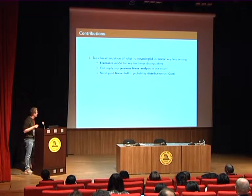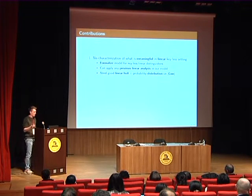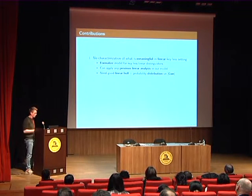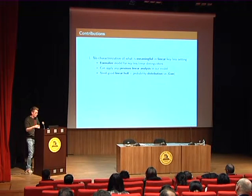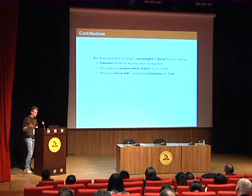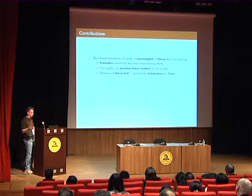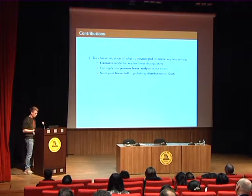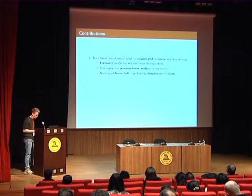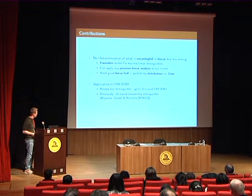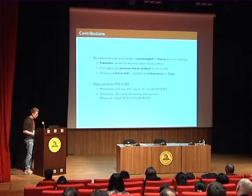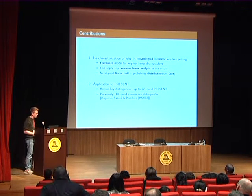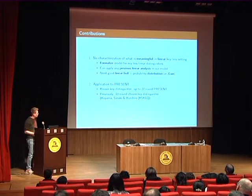This leads to the contributions of our paper. Previously we had no characterization of what a meaningful statement is when we think about linear cryptanalysis in the keyless setting. We take that step now and formalize this model. What you need is very simple: you can apply any previous linear cryptanalysis, all you need is a linear hull and a probability distribution on the absolute correlation for that linear hull. The second contribution is that we apply this to PRESENT, giving known-key distinguishers up to 27 rounds, whereas previously the best-known result in the keyless setting was an 18-round chosen-key distinguisher.